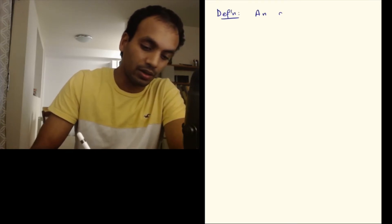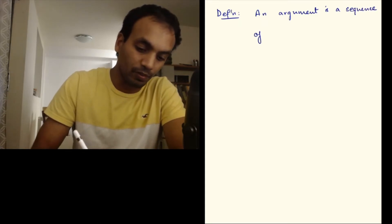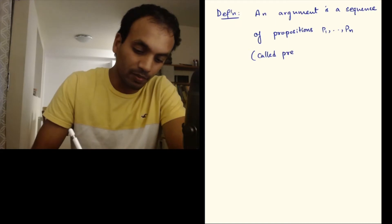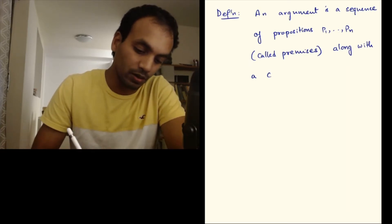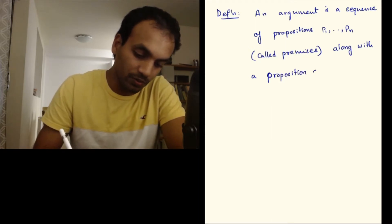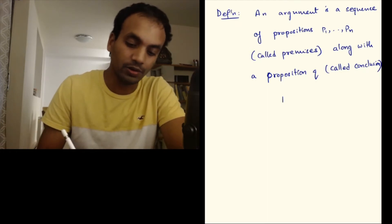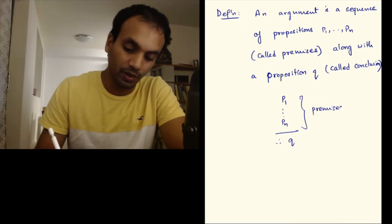These are arguments in the sense of propositional logic. So let me define what an argument is precisely. An argument is just a sequence of propositions which we call premises p1 to pn, along with a proposition q called the conclusion. So there is only one conclusion and there could be several premises. Symbolically, we write this as p1 to pn in a vertical way, and therefore q. So p1 to pn are premises and q is the conclusion.